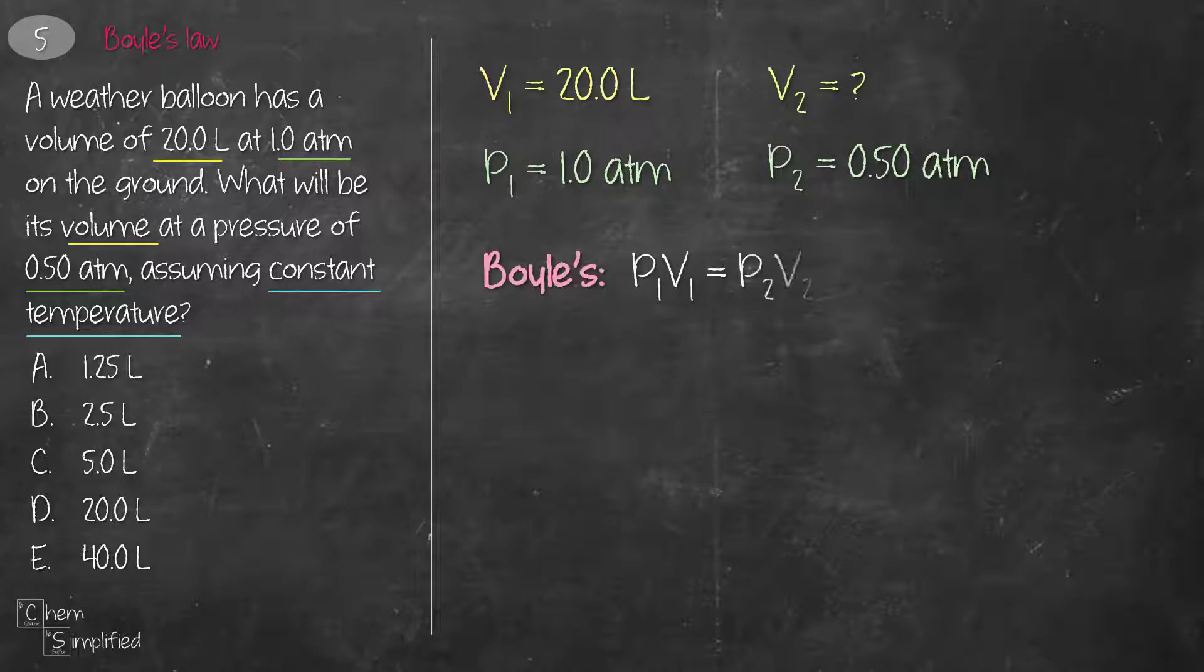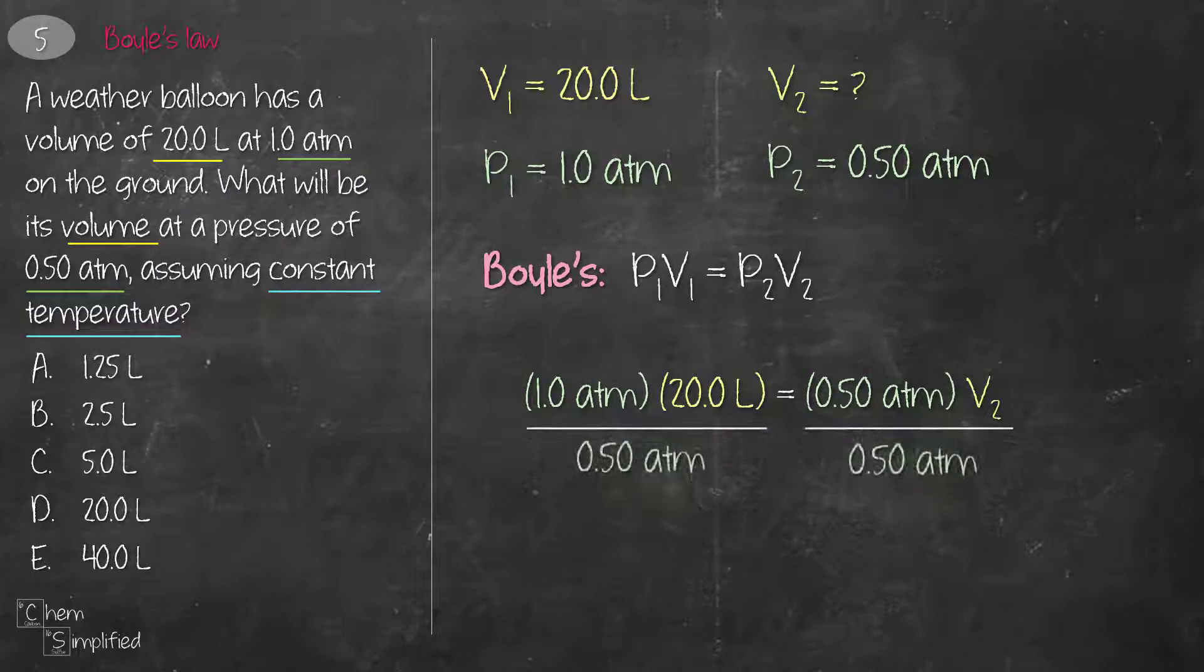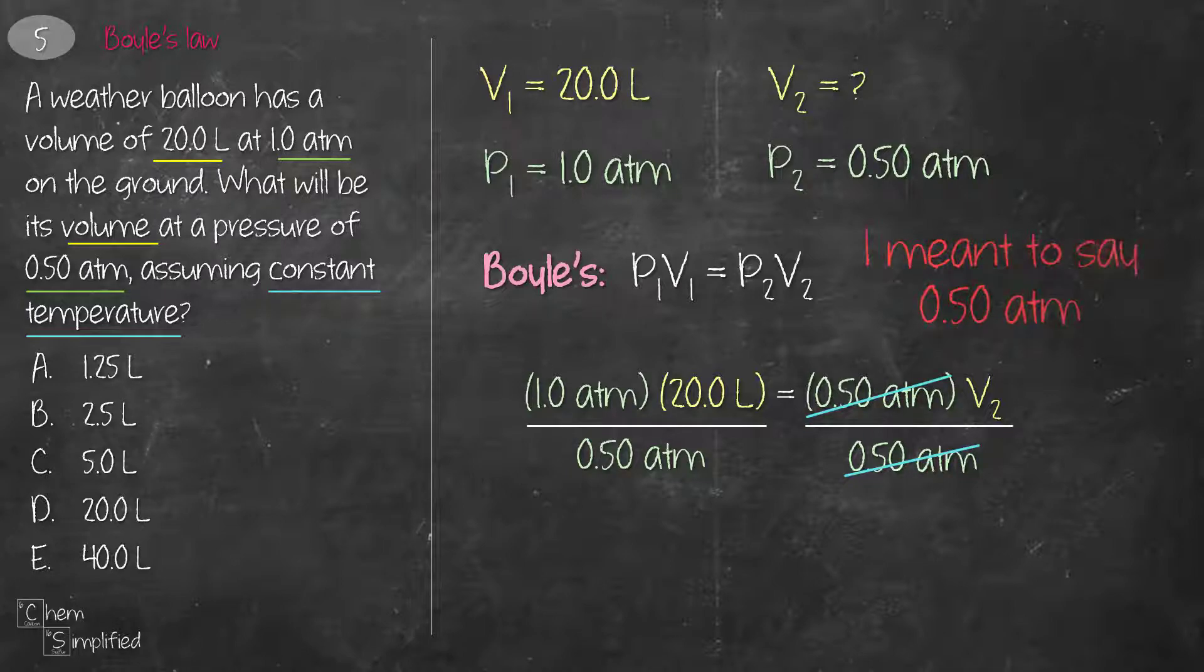The formula for Boyle's law is P1V1 equals P2V2. Since we've already tagged the information that's given, we're going to plug it into this equation. To solve for V2, we're going to divide both sides with 0.1 atm, and that gives us V2 is 40 liter.